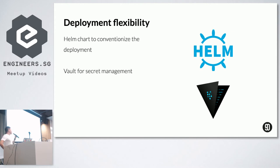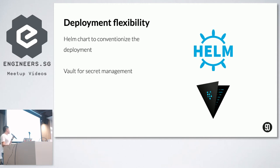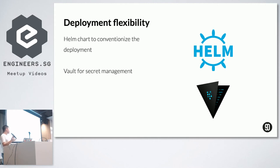For secret management, at first we used Kubernetes secrets. But there was an issue — not everyone had knowledge of Kubernetes, and not everyone preferred using kubectl to create a secret. So we chose Vault as a replacement. In Vault, we can use the UI to update secrets, which is very user-friendly. Even those without a technical background can still use the UI to update the secrets they need.